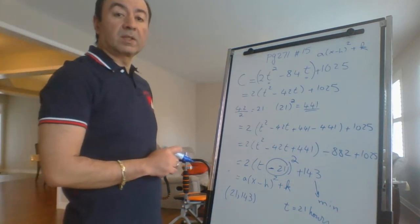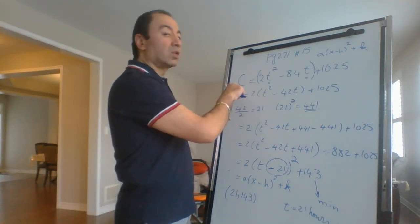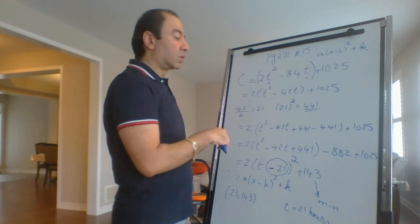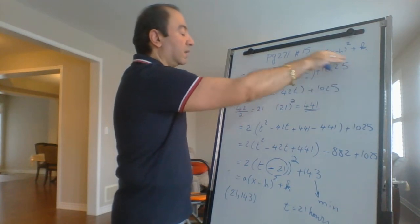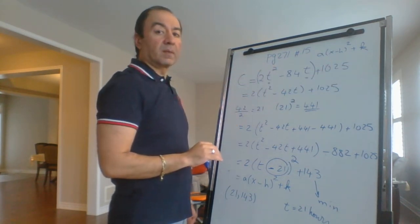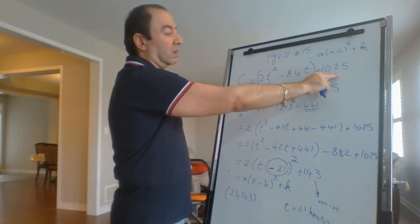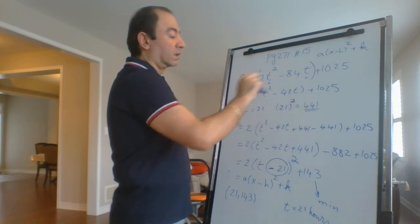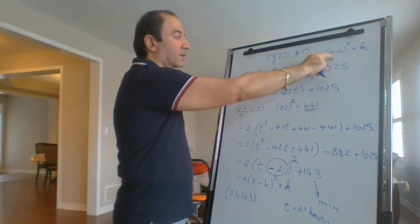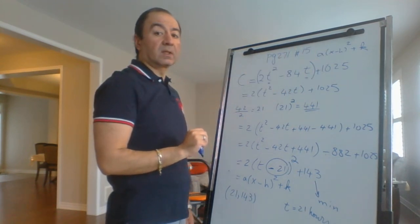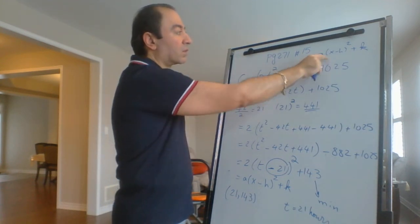I'll go over it again. In this question they give us a relationship between cost and time—cost of operating a machine and the time the machine is used. The relation was in standard form. Standard form doesn't tell us the max or the min; it gives us the y-intercept but doesn't give us max or min. So in order to find the max or min, I need the vertex form.